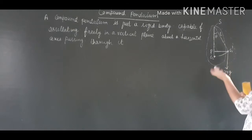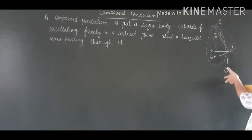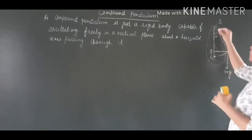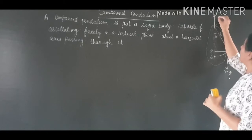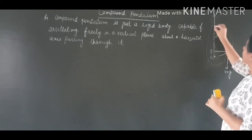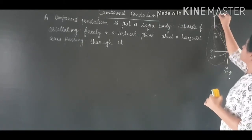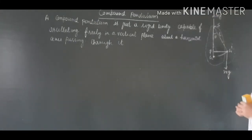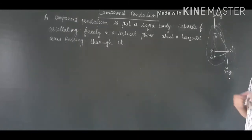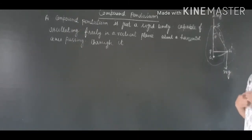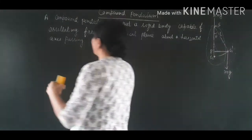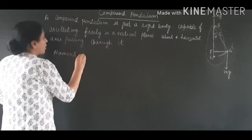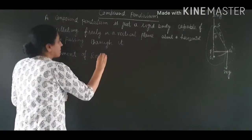At point G dash, force Mg acts downward. An equal and opposite reaction force also acts at point S. These two equal and opposite forces form a couple — a restoring couple.